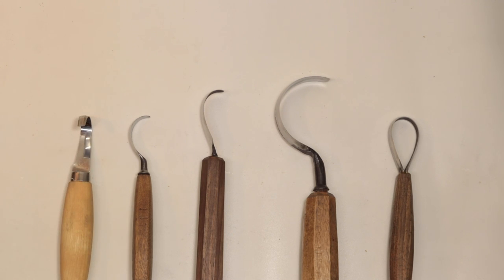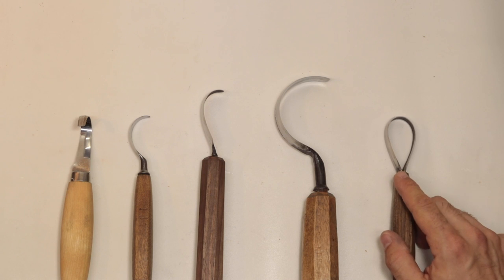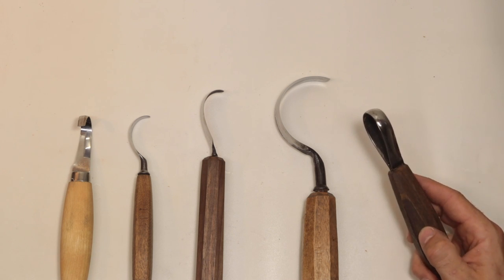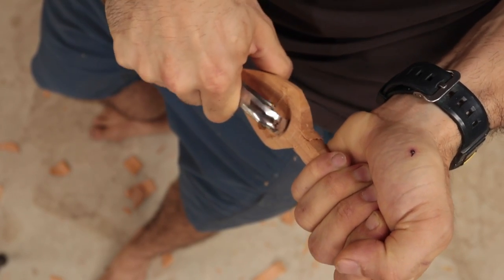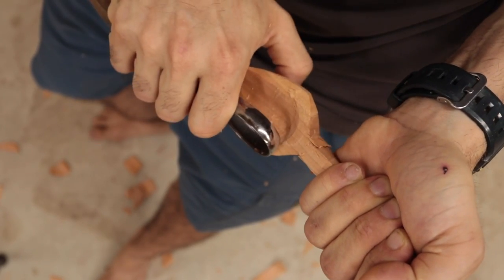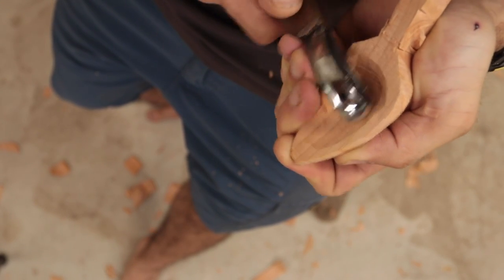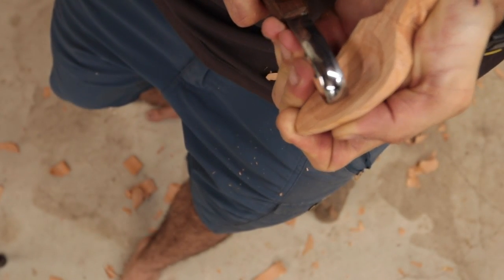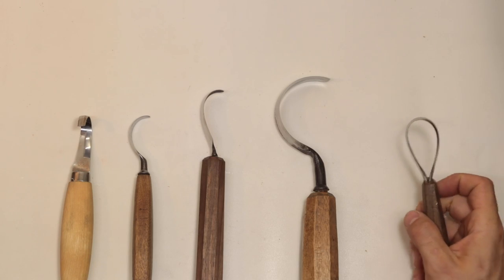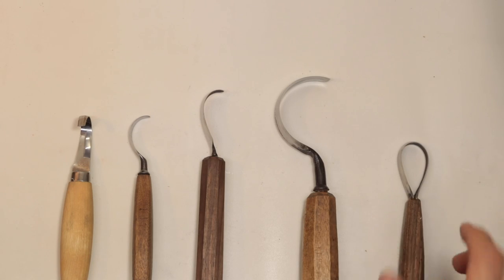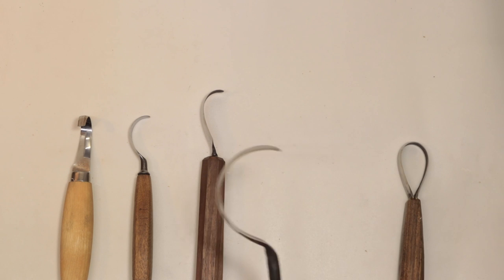If you're looking to have the fewest tools possible, then I'd recommend getting something like this scorp from Lee Stoffer. It will give you the greatest versatility. You don't need right and left-handed hook knives, which are required for scoops with deep vertical walls, and the compound curve lets you carve a variety of spoon bowls.